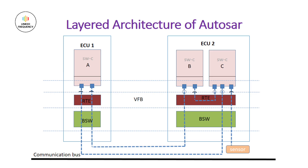Let's understand this with the help of an example. On the screen, you can see there are two ECUs, namely ECU1 and ECU2. The communication or interaction between ECU1 and ECU2 is known as inter ECU communication. Whereas the communication within the ECU, that is between software component B and software component C, is known as intra ECU communication.